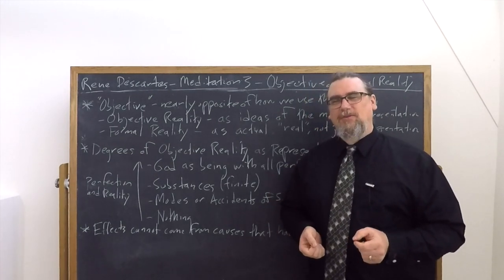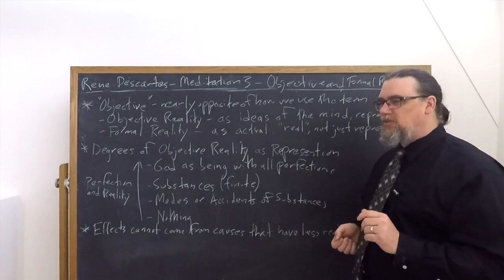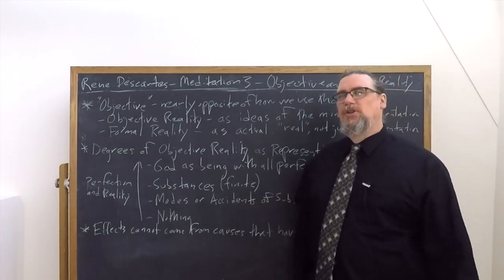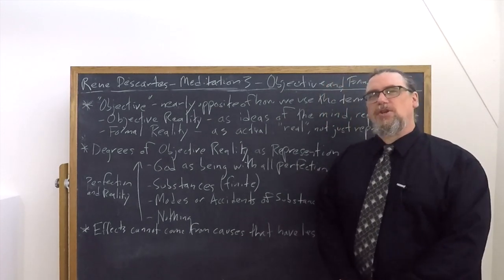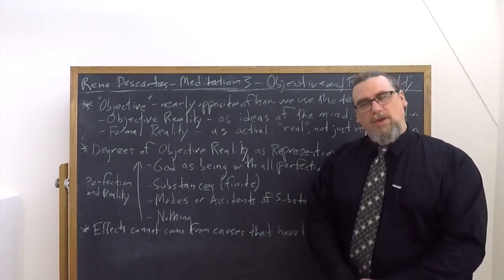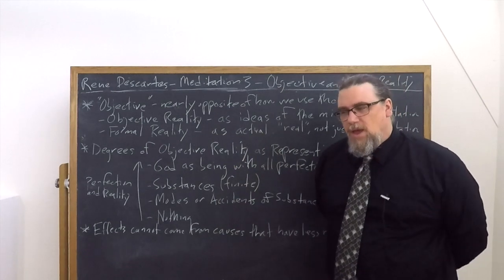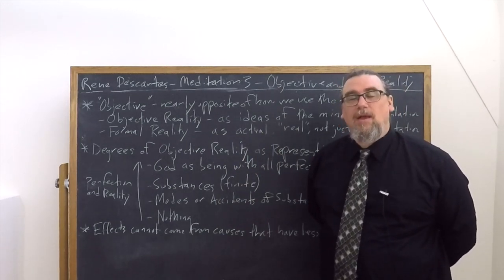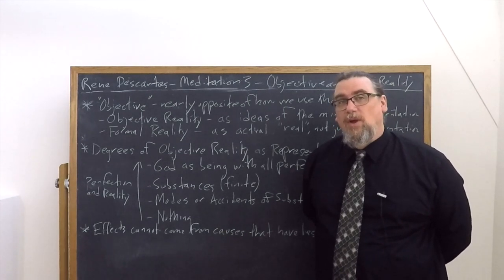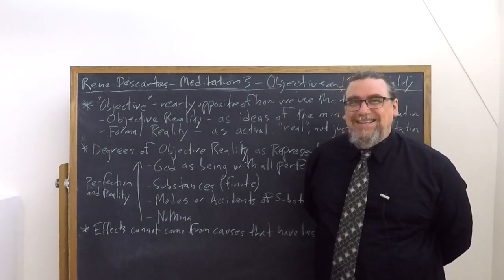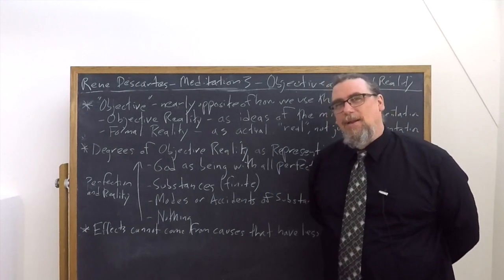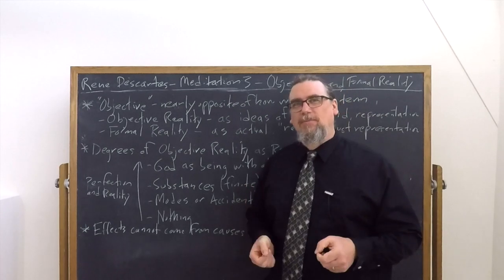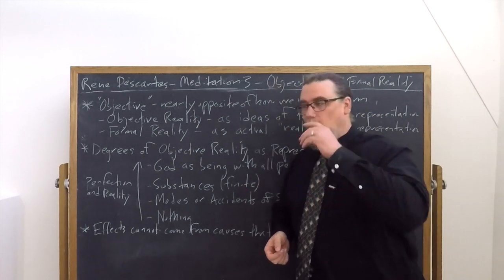So let's talk first about what it is that he means by these terms, and then we need to discuss why these distinctions are so important, not only within Cartesian metaphysics as a whole, his attempt to sort of reconstruct knowledge, but also for the argument that he's making in Meditation 3, which is going to give him the existence of God and God not being a deceiver, which then allows him to reconstruct the possibility of knowledge of the external world.